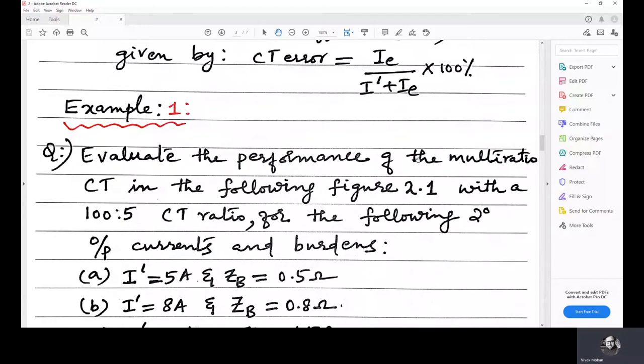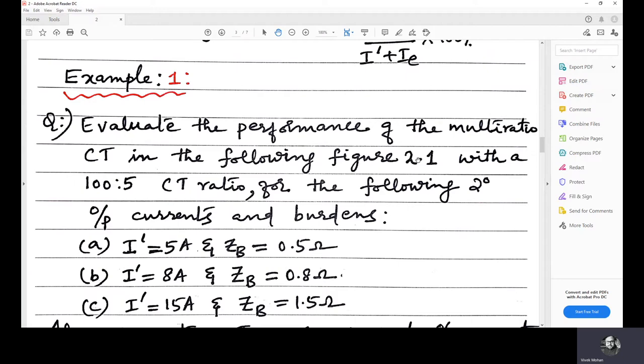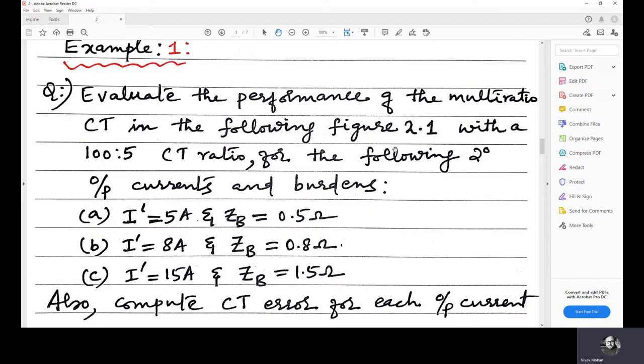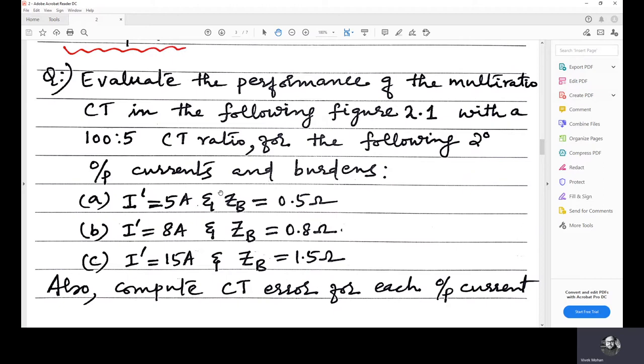In this lecture, we will see an example of an analysis of performance or evaluation of performance of the current transformer. So, the question is, evaluate the performance of the multiratio CT in the following figure 2.1 with 100 is to 5 CT ratio for the following secondary output currents and burdens.